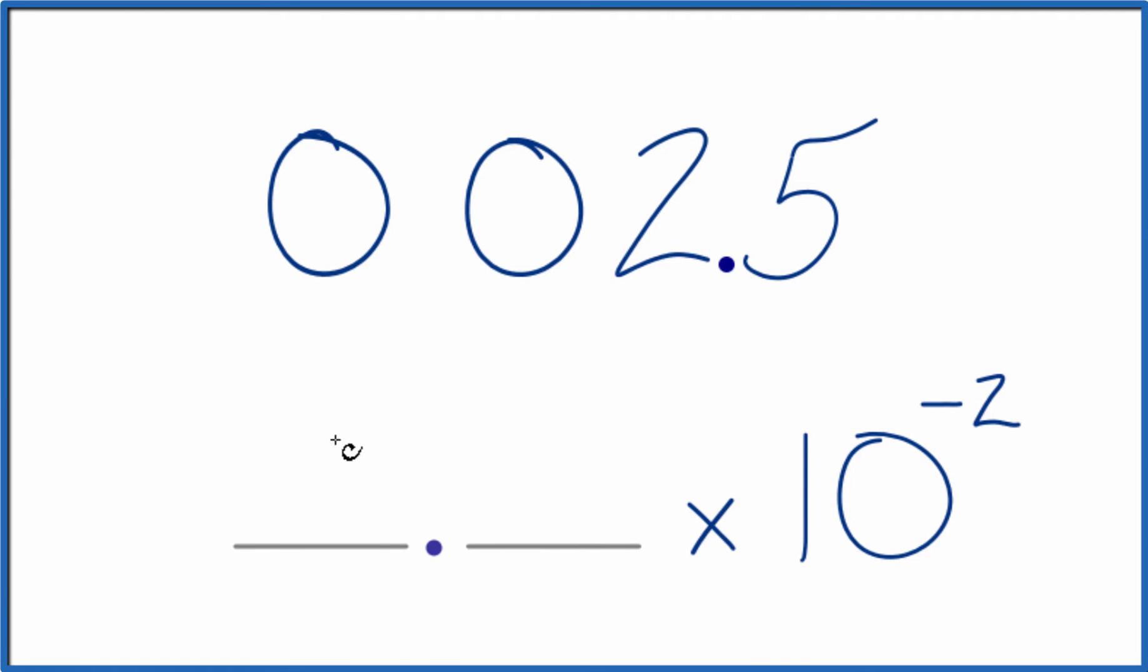So now we just write 2.5 and it's times 10 to the negative 2. So when we write 0.025 in scientific notation, we end up with 2.5 times 10 to the negative second. And these have the same value. They're just written differently, represented differently.